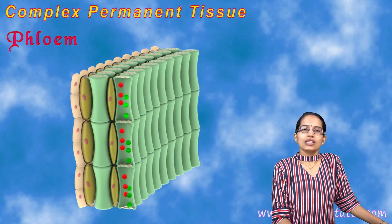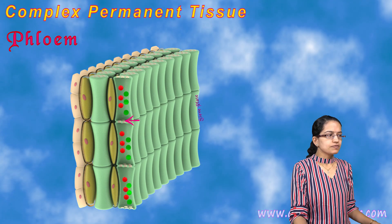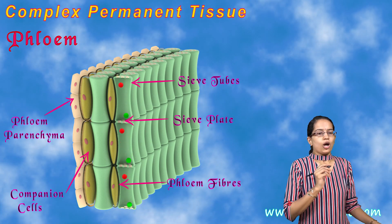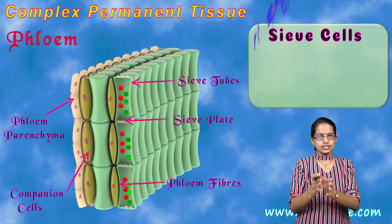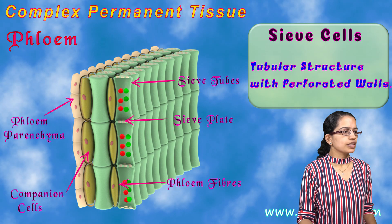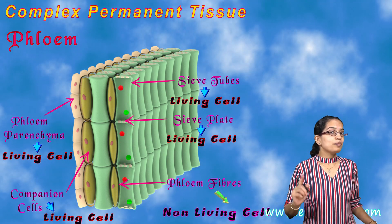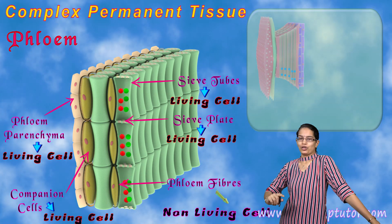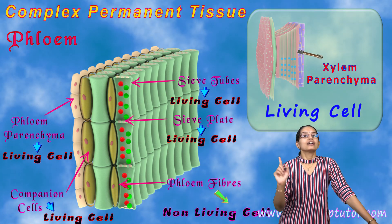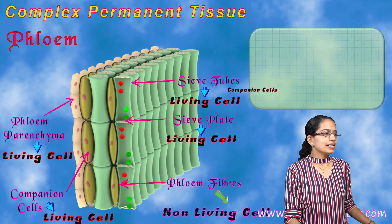The five components of phloem are: sieve cells, sieve tubes, companion cells, phloem fiber, and phloem parenchyma. Sieve cells are tubular structures with perforated walls. All of these components are living except phloem fiber, which is non-living. Note the key difference: in xylem, only one component — xylem parenchyma — is living; in phloem, only one component — phloem fiber — is non-living.